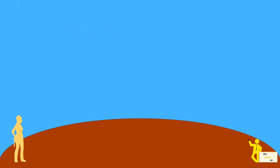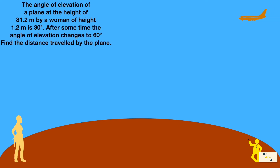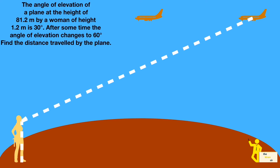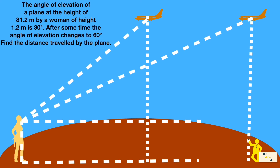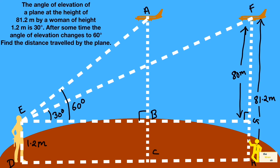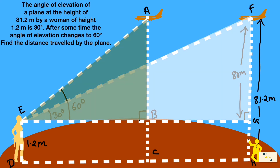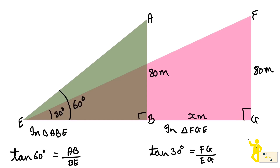The seventh and last type of question includes the height of a person. The height of the person is 1.2 meters and the height of the plane above the ground is 81.2 meters. You subtract the person's height from the plane's height to get the effective height AB and FG as 80 meters in both diagrams. Both triangles AB and FG are equal. Solve each triangle individually, substitute the values, and find BG — the distance traveled by the plane — by computing EG minus EB.